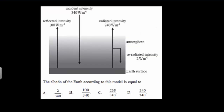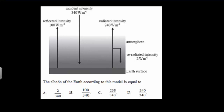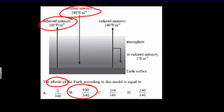Here's a second multiple choice question on the climate model. All you really need to know is what L-beta is: it's the fraction of incident radiation that gets reflected. So 100 watts per meter squared gets reflected out of 340 watts per meter squared, and the correct answer is B — 100 divided by 340.